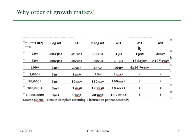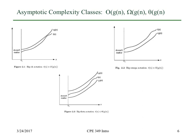But once you get up to exponential time, things really fall apart. This is only for 100 — exponential time is 10 to the 13th years. So clearly you don't want an algorithm, if you can avoid it, that's exponential. Factorial is even worse — these empty spaces are numbers much bigger than the age of the universe. So the next thing on our agenda is to talk about big O, big omega, and big theta.